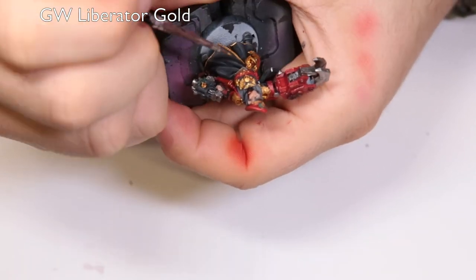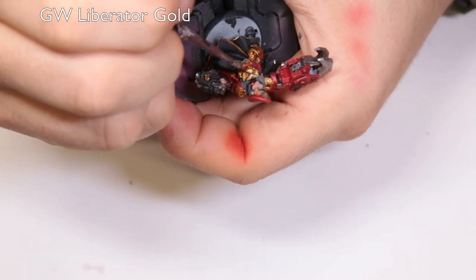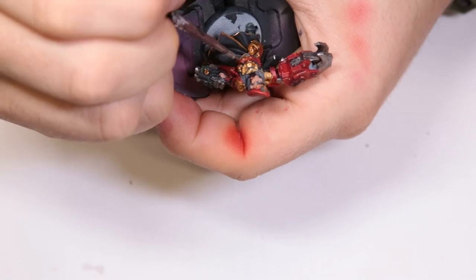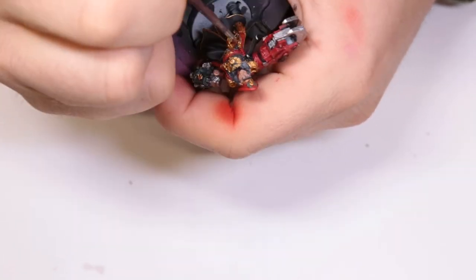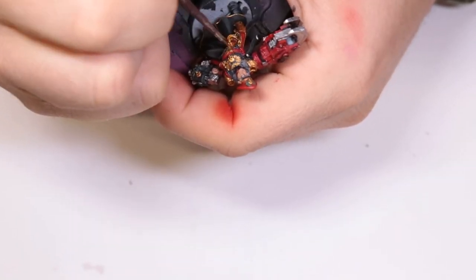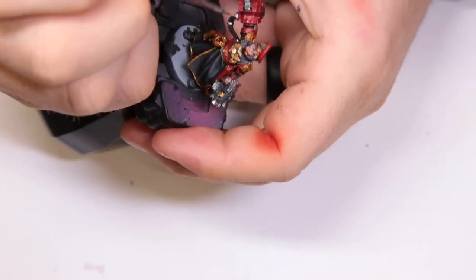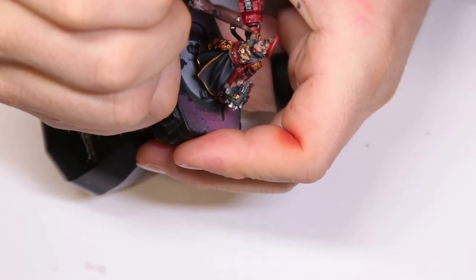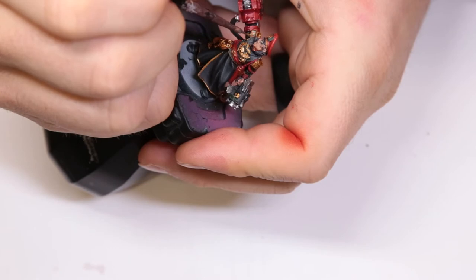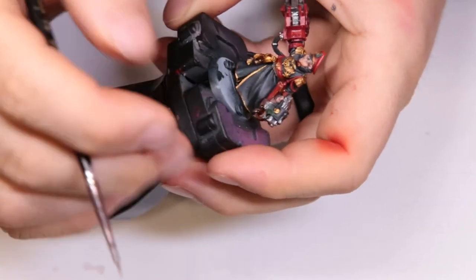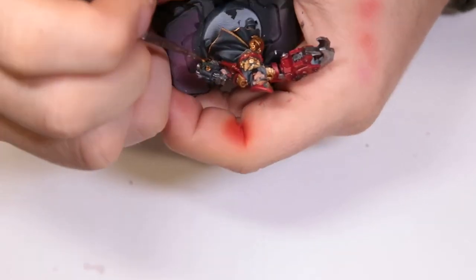Starting the process of highlighting all this gold, we're just going to start with Liberator Gold to begin with. Like I said, we hit this with Reikland a minute ago, so this is going to give us a good spot to start from. I'm kind of doing it as a wet dry brush, dragging it over the equivalent of his chest. And then we're being a little bit more selective throughout his robe, his shoulder pads, and the little necklace he's got going on there.